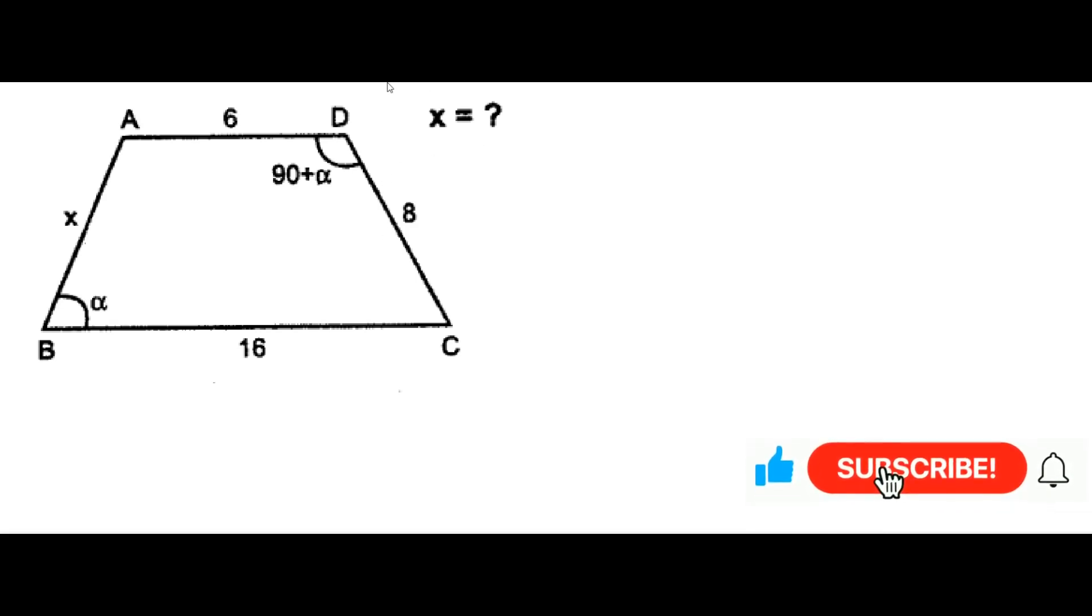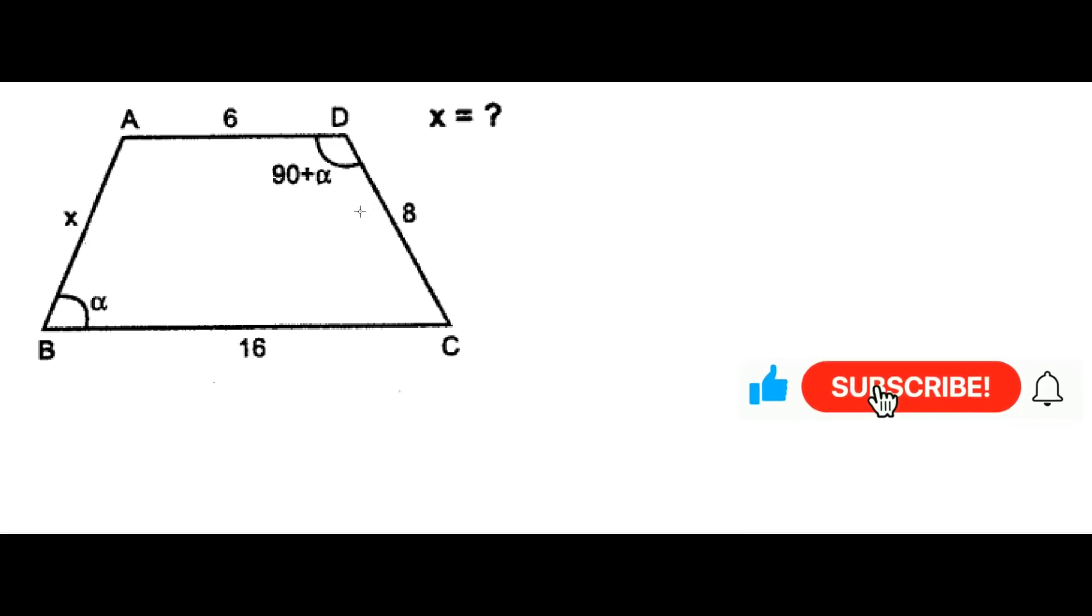We have to find out x here and all we're going to do is draw a line segment, but where to draw is the main point here. We can see that this angle is alpha and this angle is 90 degrees plus alpha, which means that if we drop an altitude here, we'll see that the angle that is located here will be equal to alpha.